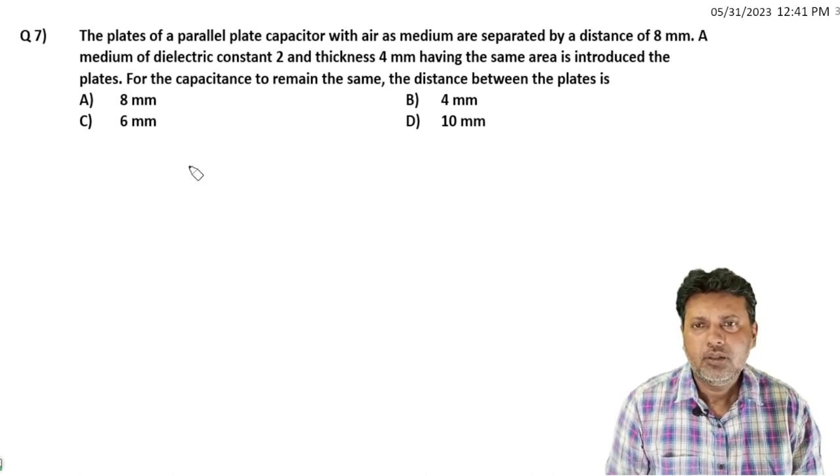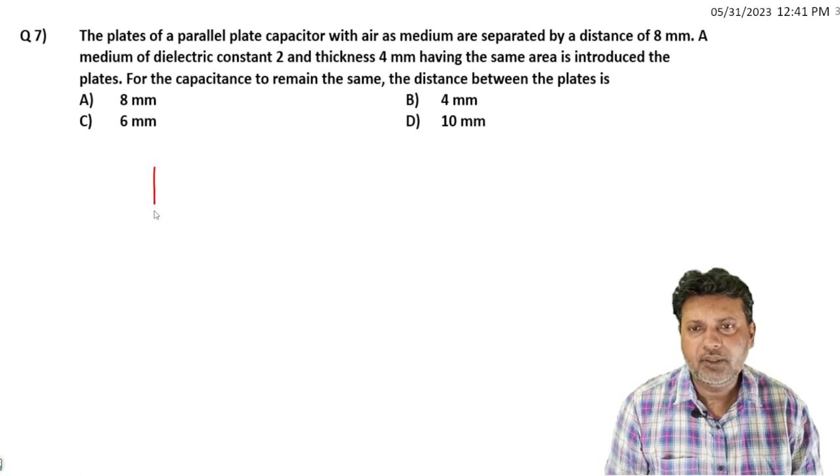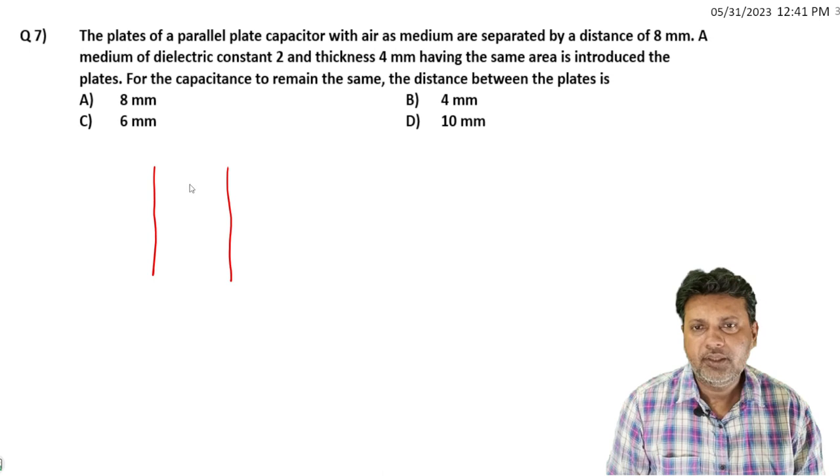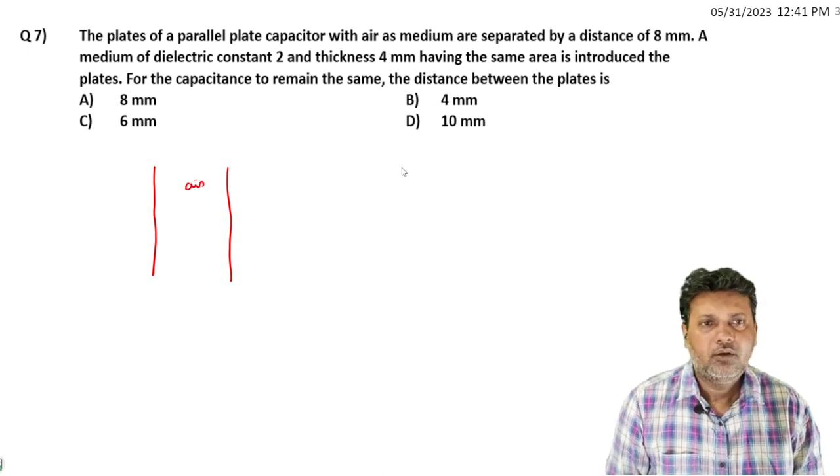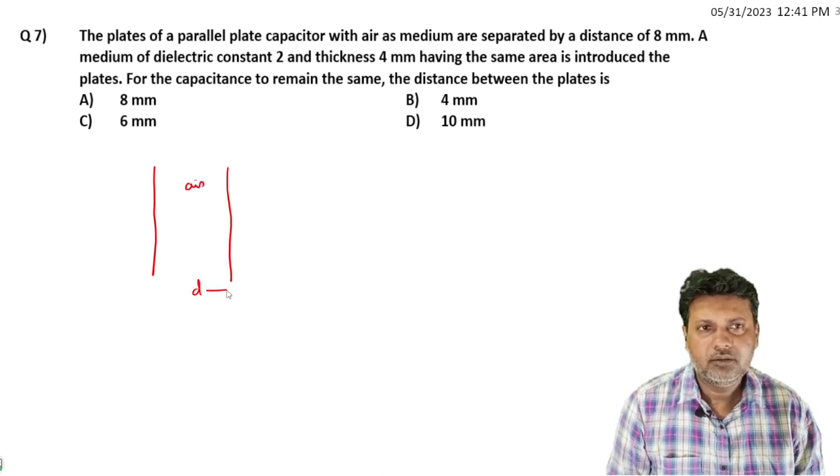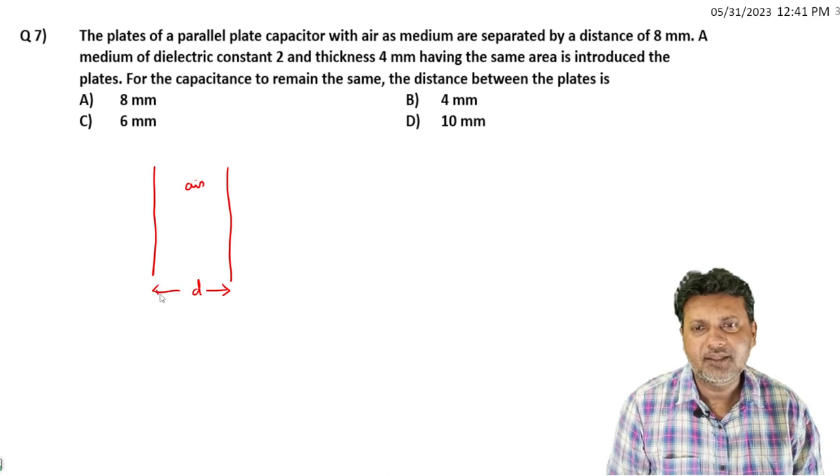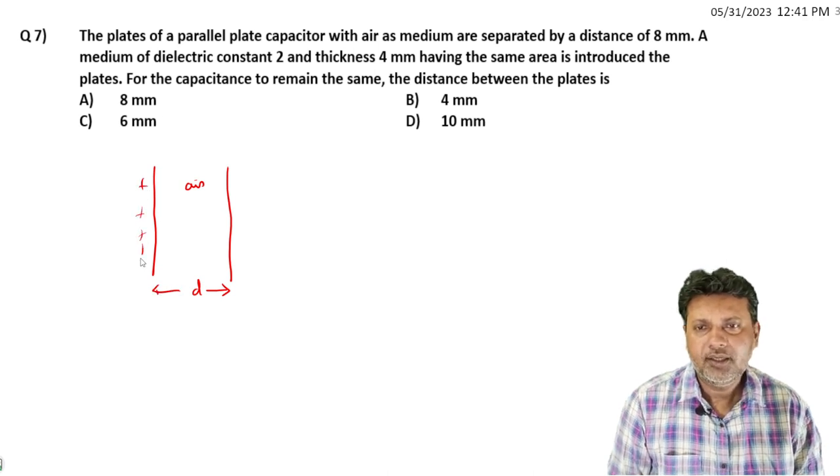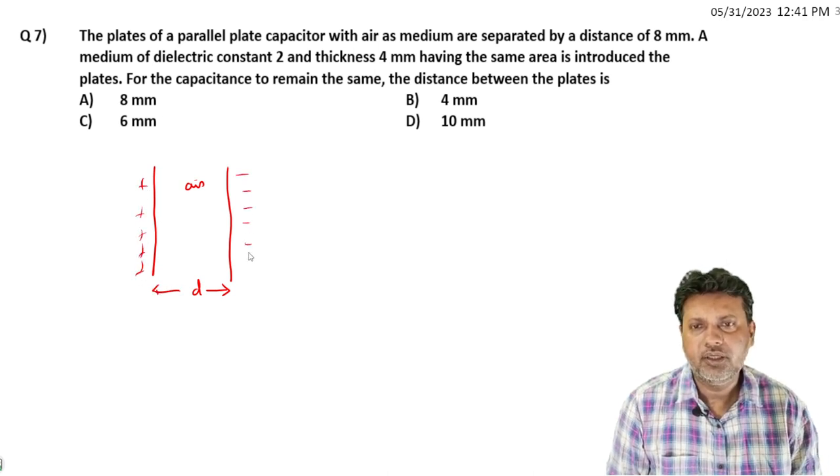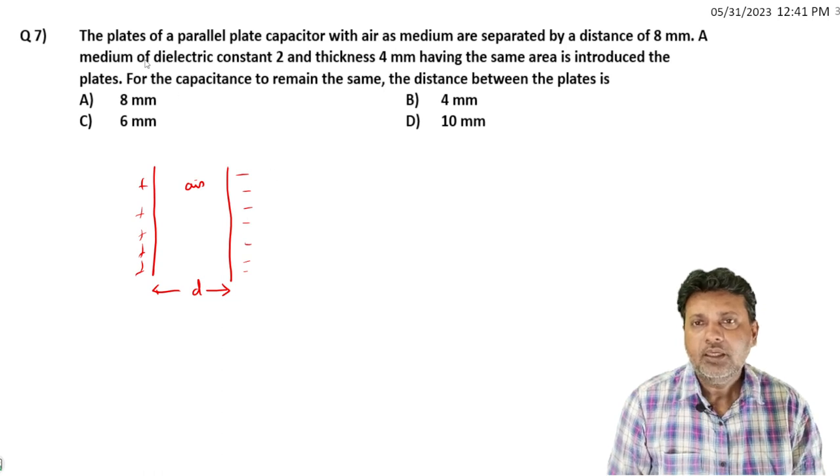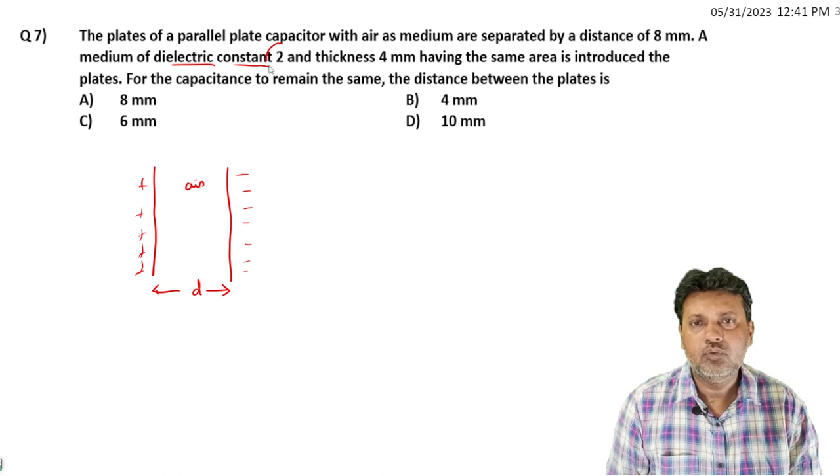The parallel plate capacitor initially has air, and the distance is 8 millimeters. We connect the positive and negative terminals. The medium has dielectric constant 2 and thickness 4 millimeters.